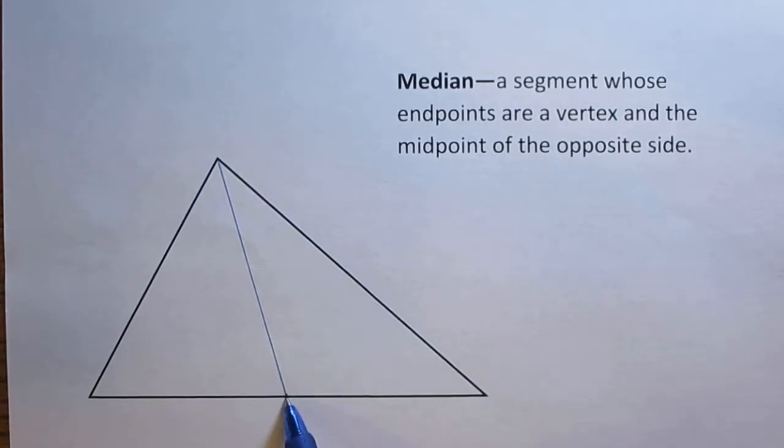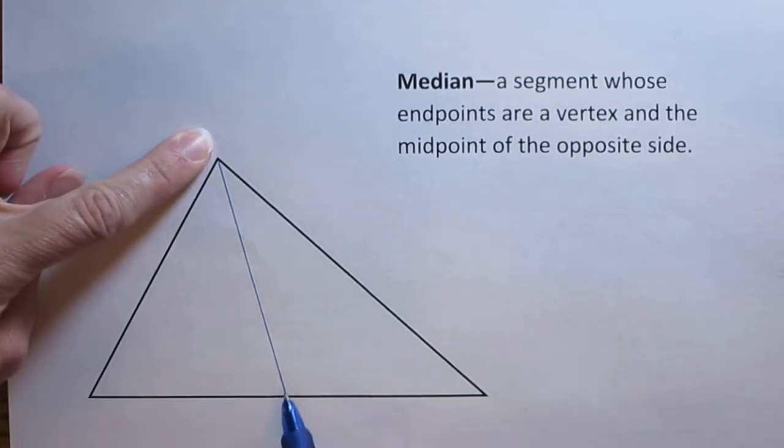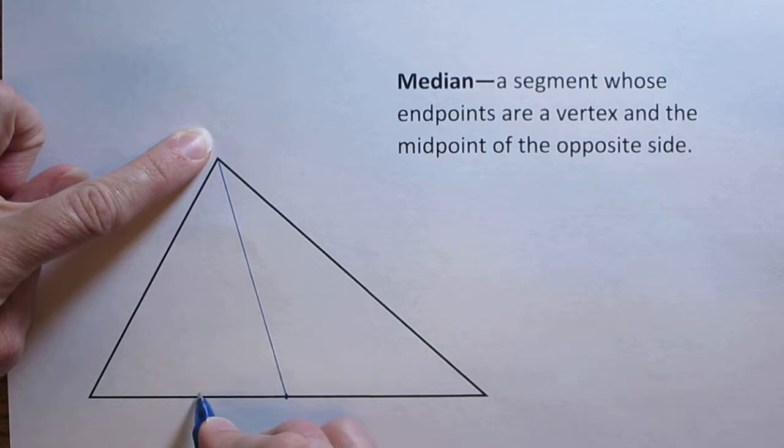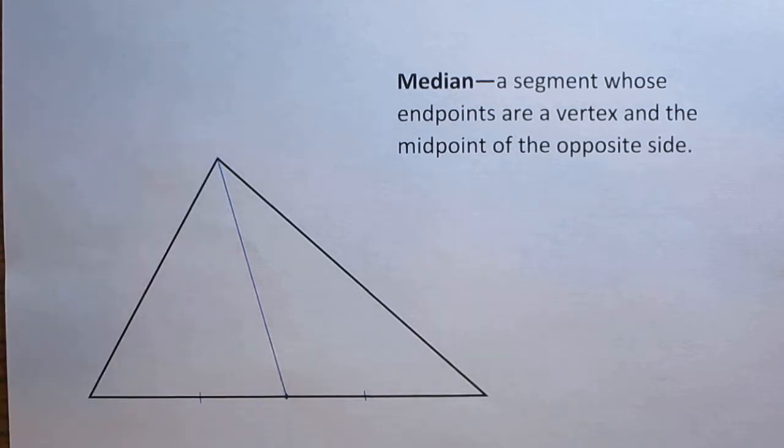So I've connected the midpoint to the opposite vertex. Since this is a midpoint, it divides this side of the triangle into two congruent parts. So this side will be congruent to this part right here. Whatever this measure is, this will be the same. So there's one median.